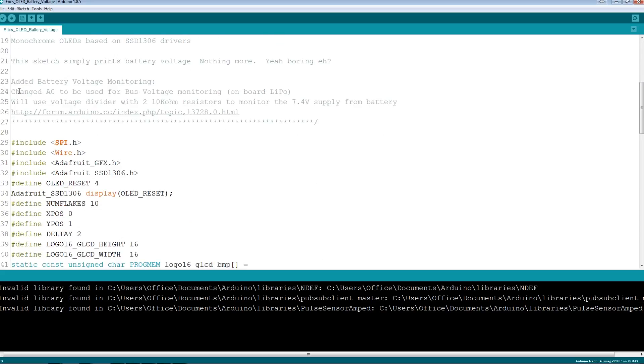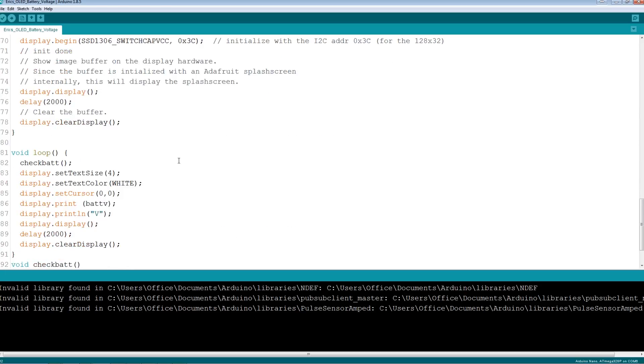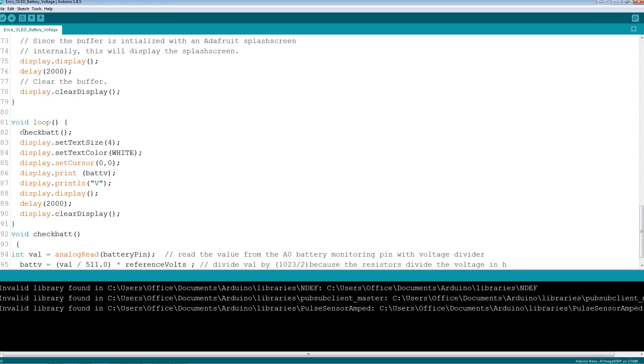Added some information about the battery voltage monitoring. We're going to use A0 like I mentioned. We're going to use two 10 kilohm resistors and here's a link to some information in the forums where you can find more info. We added a few variables here. We've got reference voltage, battery pin, and that's going to be A0, and then battery voltage. We go down to the loop, all we did was add check bat.